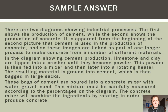Here's our sample answer: There are two diagrams showing industrial processes. The first shows the production of cement while the second shows the production of concrete. It is apparent from the beginning of the second picture that cement is used in the production of concrete, and so these images are linked as part of one longer process to make concrete from a number of different materials. In this introduction I have described the basic idea of the whole diagram by breaking it into two and showing what goes in and what comes out — the bigger picture without specific details.